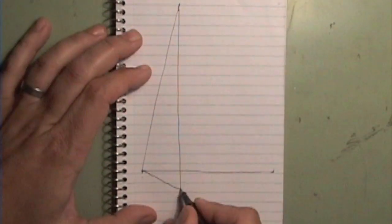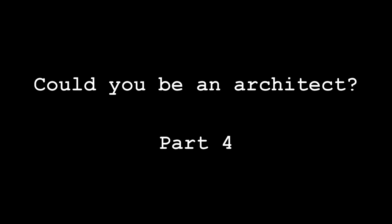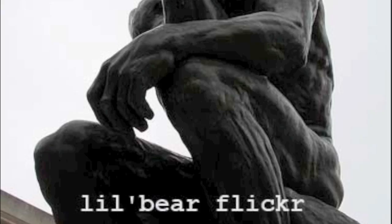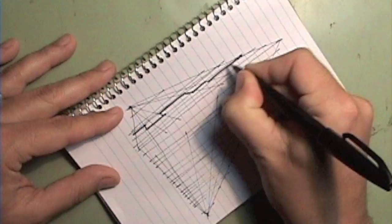This is the fourth video in a five-part series called, Could You Be an Architect? In the last three videos, I said that there are four simple questions you should answer if you're thinking about architecture as a profession.